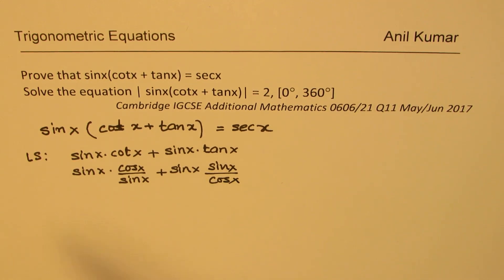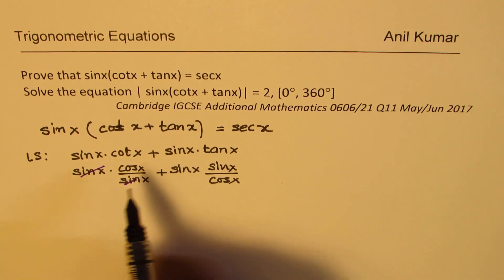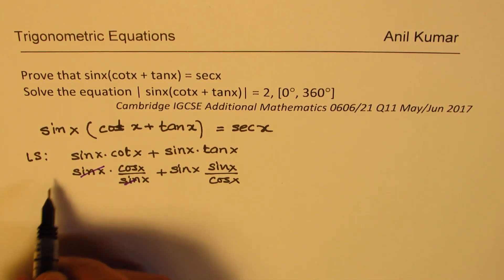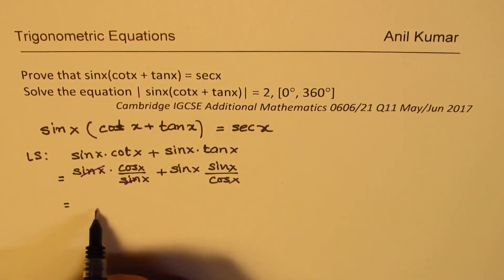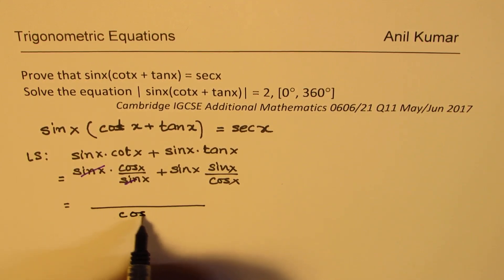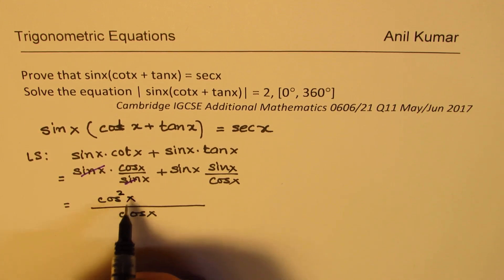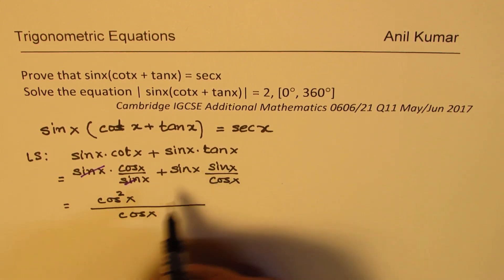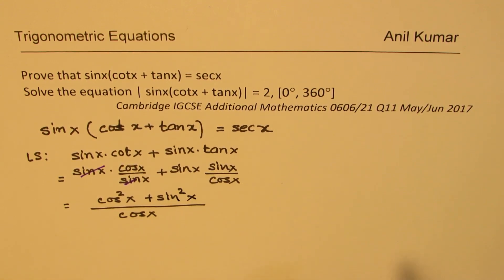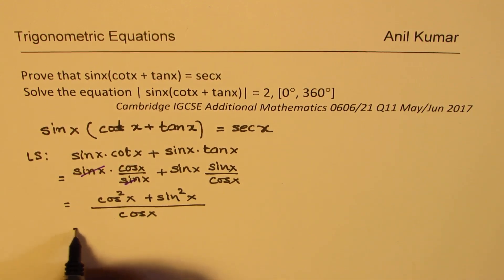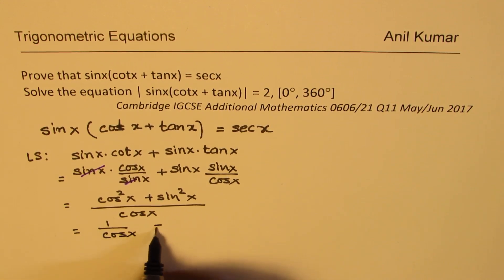Now taking cos x as the common denominator, we can get here cos square x since this was 1 and here we have plus sin square x.